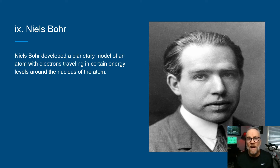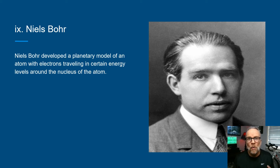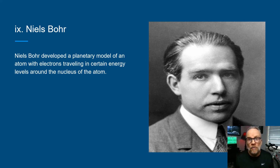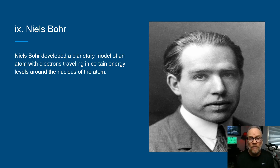Bohr borrowed some math from somebody called Rydberg. This equation he came up with for calculating the energy of electrons was actually borrowed from another scientist. As Galileo said, 'I've been able to reach such great heights because I've stood on the shoulders of giants.' Although the idea and concept came from Bohr, he used mathematical constants from other scientists.